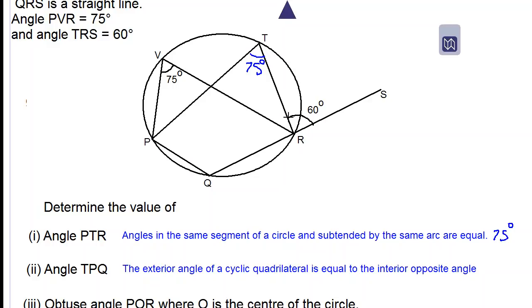And we have the exterior angle of 60 degrees. And according to the theorem, the exterior angle of our cyclic quadrilateral is equal to the interior opposite angle. The interior opposite angle is here, where TPQ is, that would be 60 degrees. So the answer is 60 degrees TPQ.